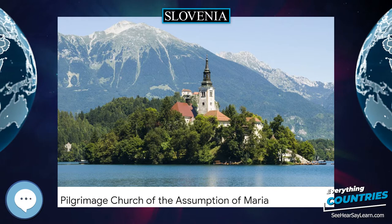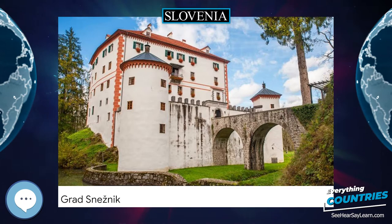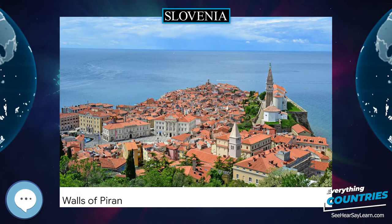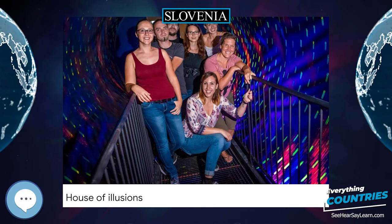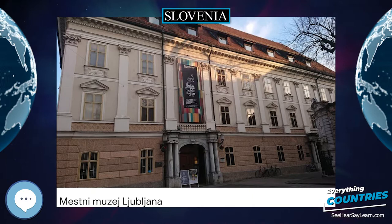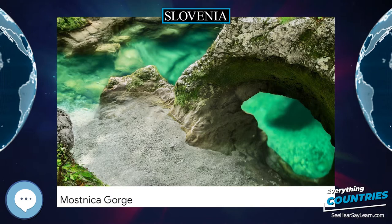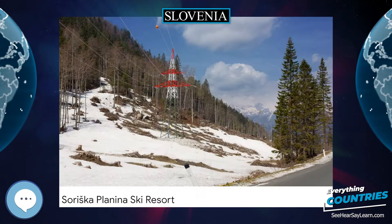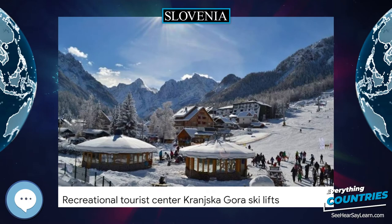The Treaty of Rapallo of 1920 left approximately 327,000 out of the total population of 1.3 million Slovenes in Italy. After the fascists took power in Italy, they were subjected to a policy of violent fascist Italianization, causing mass emigration of Slovenes, especially the middle class, from the Slovenian Littoral and Trieste to Yugoslavia and South America. Those who remained organized networks of passive and armed resistance, including the militant anti-fascist organization TIGR, formed in 1927. The Slovene People's Party launched a movement for self-determination demanding the creation of a semi-independent South Slavic state under Habsburg rule.